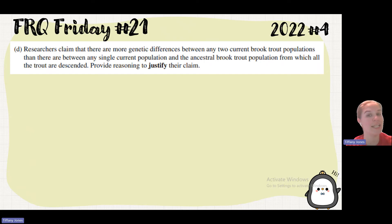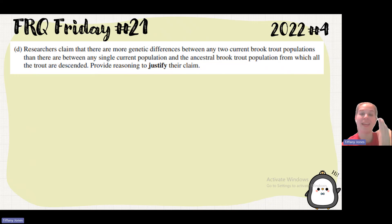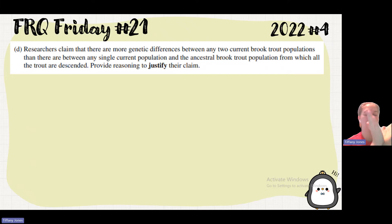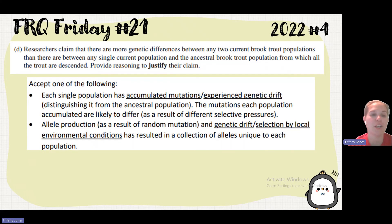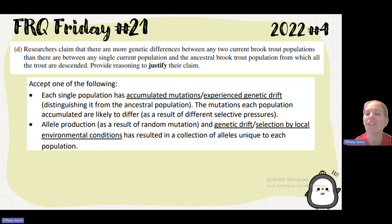Part D: researchers claim that there is more genetic difference between any two current brook trout populations than between any single current population and the ancestral brook trout population from which all the trout descended — provide reasoning to justify this claim. They're saying we have these two trout that diverged at a divergence point and went in two different directions, so there's more genetic difference between them than between any of these trout and the ancestor. This is due to mutations — once they diverge, they're under independent reproduction, so mutations accumulate in each individual lineage. Each population has accumulated mutations and experienced genetic drift; the alleles each population accumulates are likely to differ due to allele frequency changes and local selection conditions, resulting in a collection of alleles unique to each population.